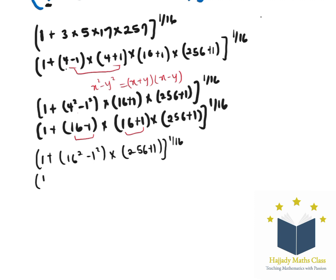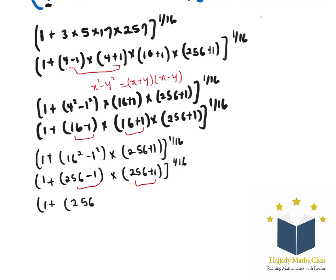So here we have 1 plus 16 squared, which is the same thing as 256 minus 1 squared, multiplied by 256 plus 1. Looking at this again, difference of two squares works. So we're going to have x squared minus y squared, which is 1 plus 256 squared minus 1 squared, all to the power of 1 over 16.